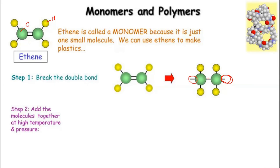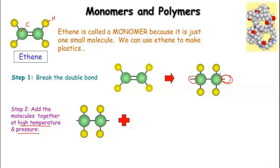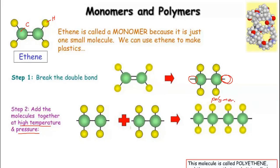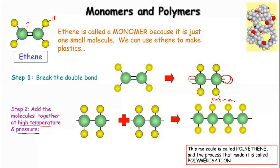In the next step, we add the molecules together at high temperature and pressure. The single-bonded carbon atoms — two carbon atoms and four hydrogen atoms — combine with each other to form a long chain. This long chain of hydrocarbons is also known as the polymer. The monomer is ethene, and monomers combine to form the polymer, polyethene. This process requires high temperature and pressure.